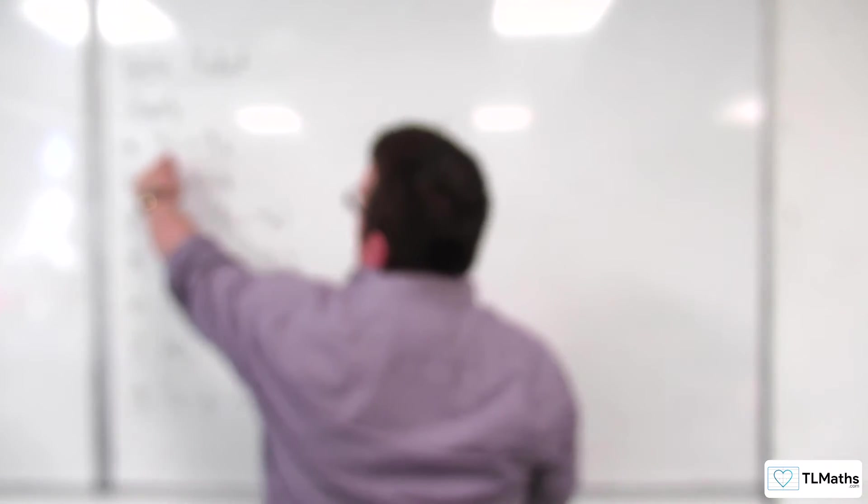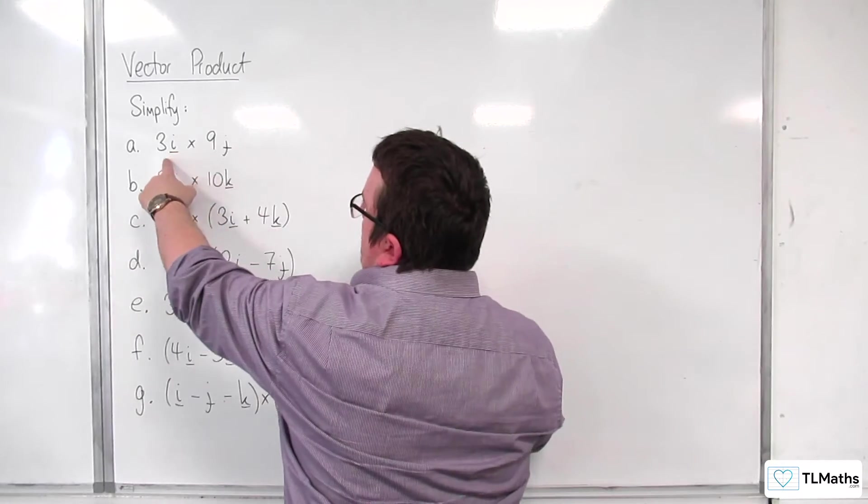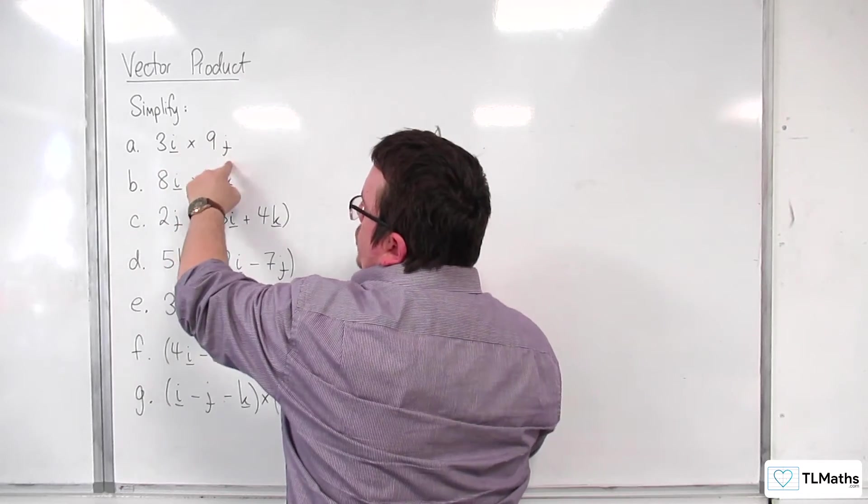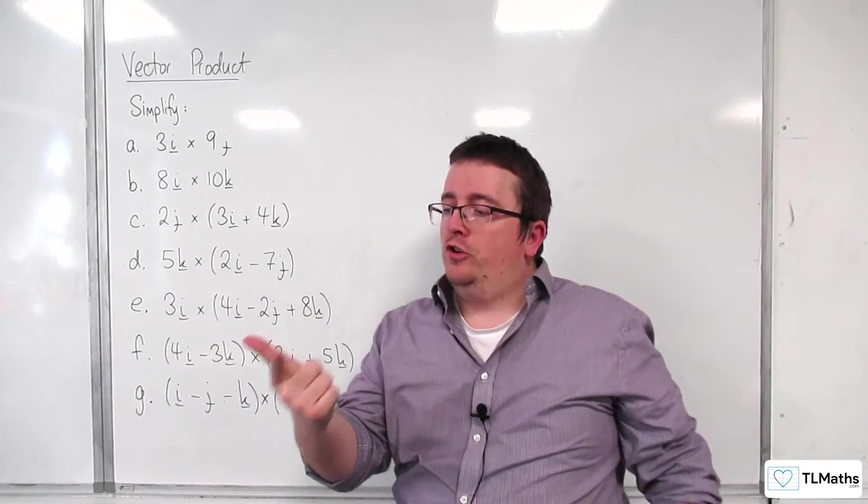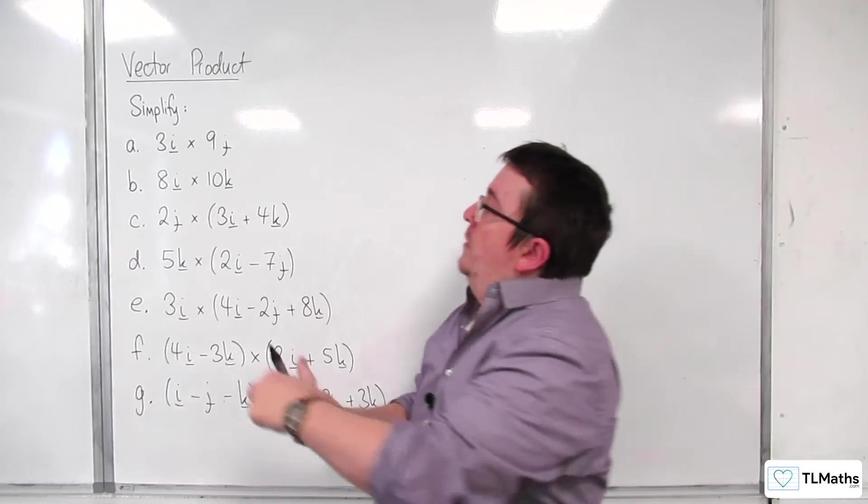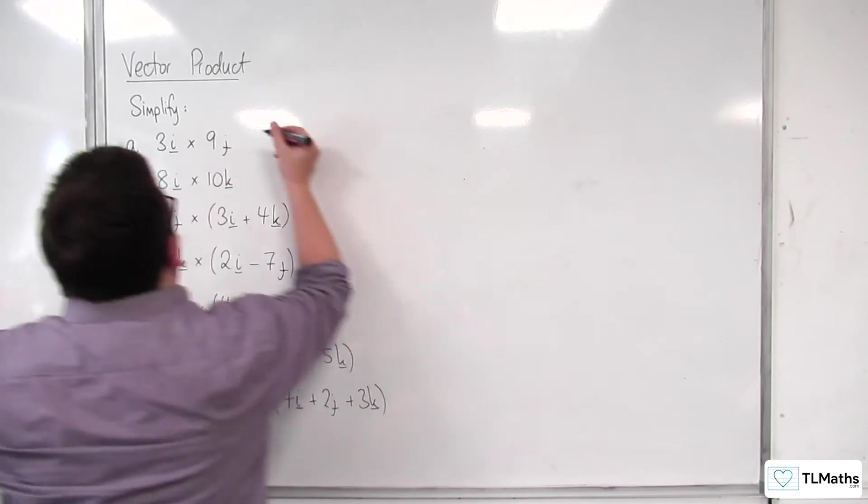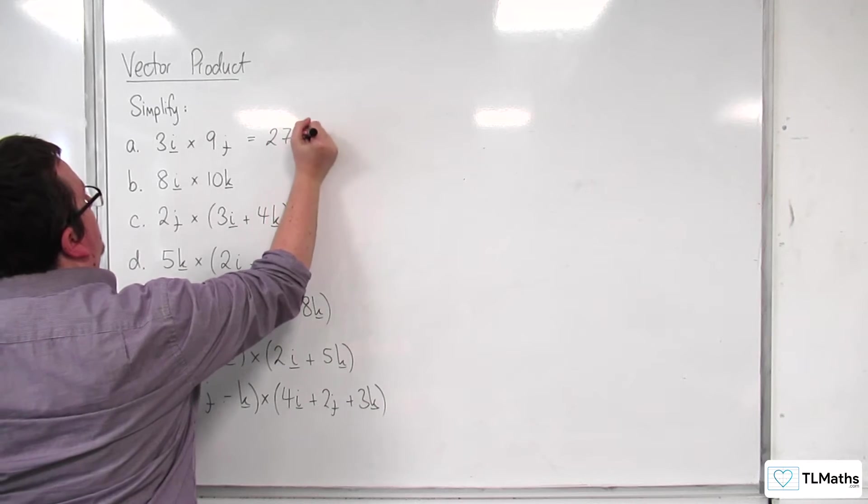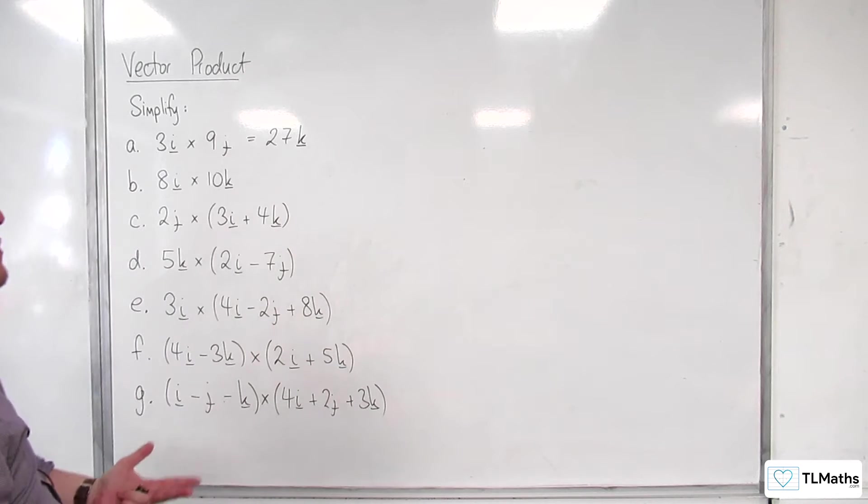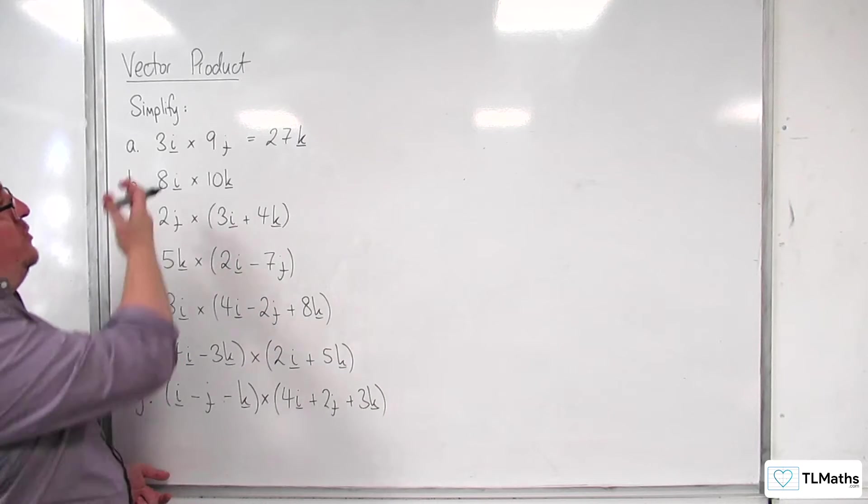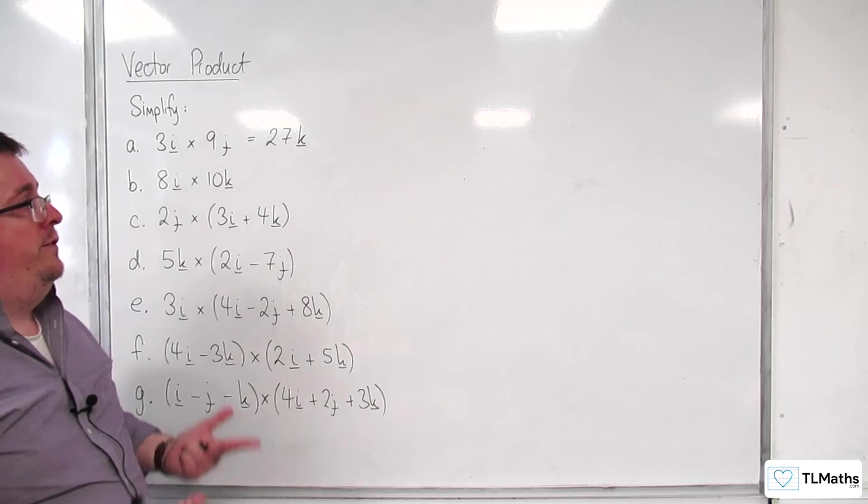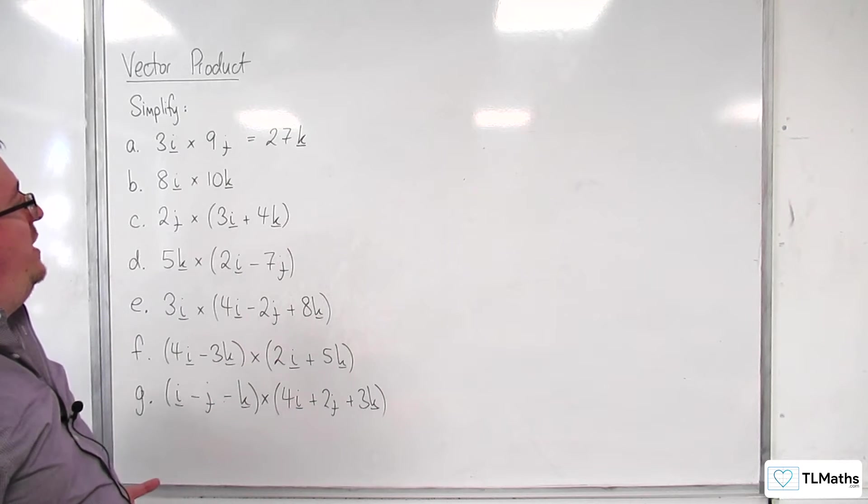So, if we have a look at a first, we've got 3i cross 9j. So, i, j, k. i cross j is k. 3 nines of course 27. And so, this is 27k. So, I didn't need to find the determinant of a 3 by 3 matrix. I could just do this directly. You could obviously check these. You know, if you want to check these using a matrix, you can.